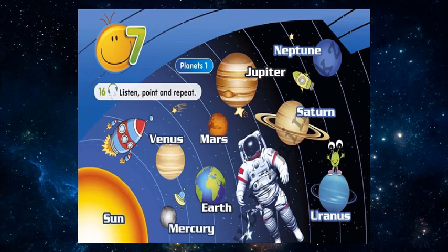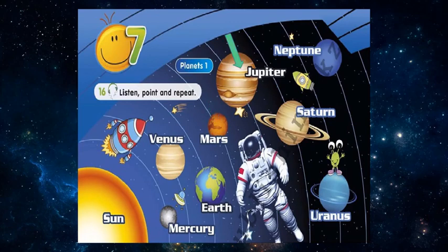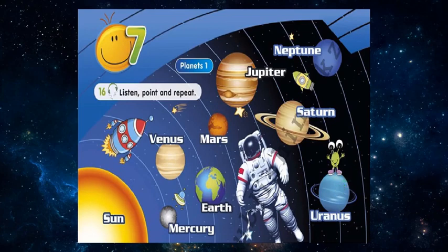Listen, point, and repeat: Sun, Mercury, Venus, Earth, Mars, Jupiter, Saturn, Uranus, Neptune.